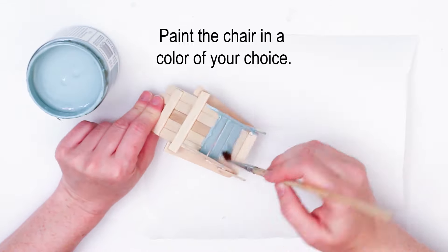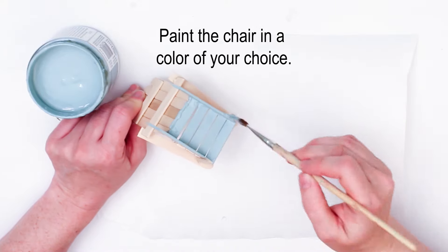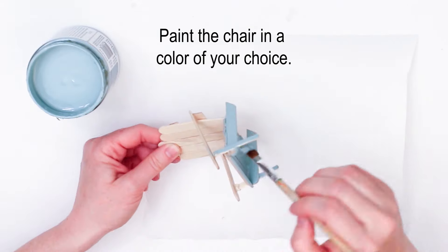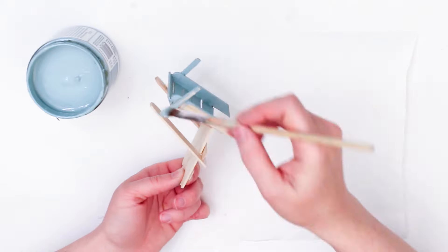Once the hot glue has fully cooled and set, you can paint your chair in the color of your choice. And there you go. That's all you need to make your own little beachy chair for your fairy garden.